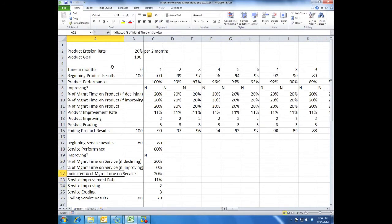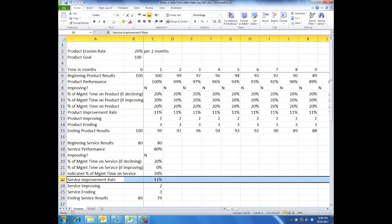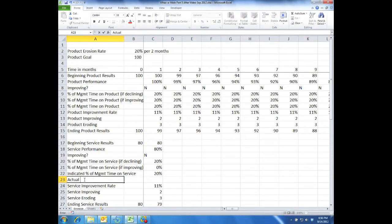So this is what the formula would tell you, that in this situation you should spend 20% of time on service. And then I'm going to add actual percent of management time on service. And this will be basically the minimum of that and 100% minus percent of time on product.